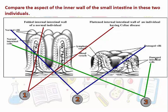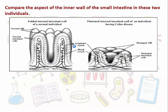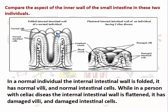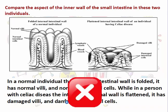We're not comparing one thing — we're comparing three things here. A wrong approach would be to say: in a normal individual, the internal wall is folded, it has normal villi and normal intestinal cells, while in a person with celiac disease the internal wall is flattened, it has damaged villi and damaged intestinal cells. This is not correct. We should not put all aspects together on one side and all characteristics together on the other, just adding the word 'while' between them. The correct comparison has to be parallel.